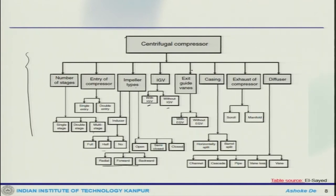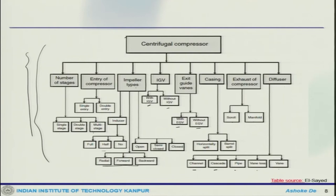You could also have an exit guide vane — with EGV or without EGV. Regarding casing, it may have a horizontal split or a barrel split. The exhaust of the compressor could be a scroll or manifold. Then you have different kinds of diffuser vane: it could be channel type, cascade type, pipe, vane-less, or vaned. All these together illustrate the potential complexity of the system, with many mix and match combinations possible.